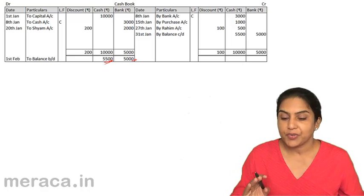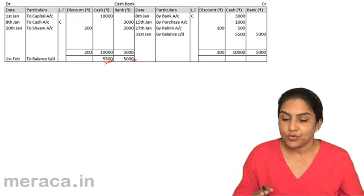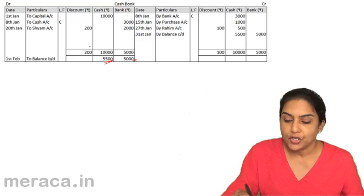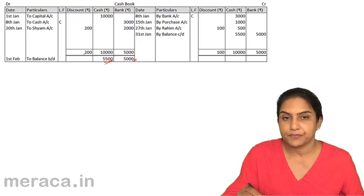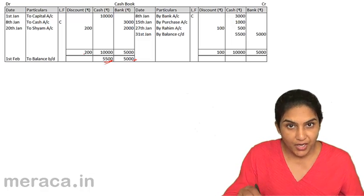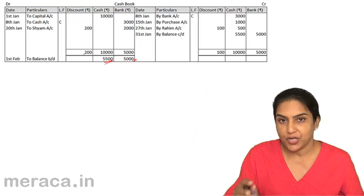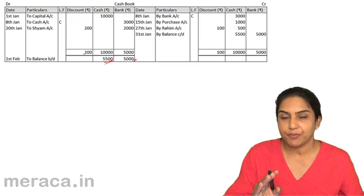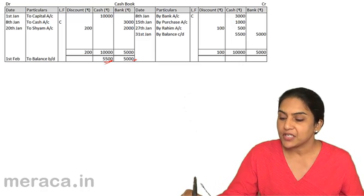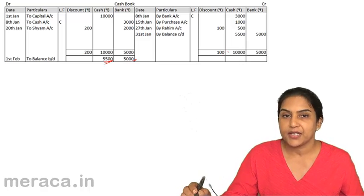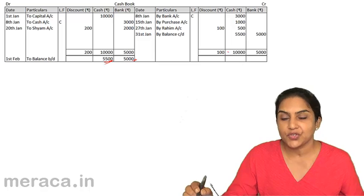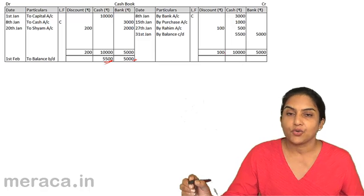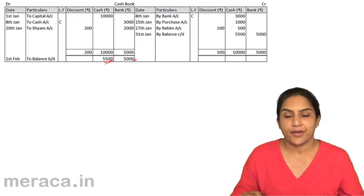The discount account is only the total. We have a total of 200 discount allowed. The discount column on the debit side represents discount allowed, and the discount column on the credit side represents discount received, and that total is 100.